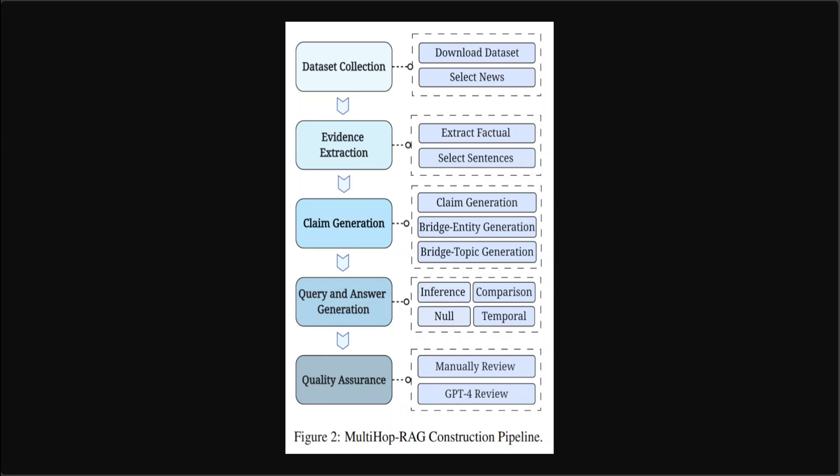Once step one was done, they moved on to the second step: evidence extraction. For each article, they extracted factual or opinion sentences using a trained language model. These factual sentences are later used as evidence for answering multi-hop queries. They included only those news articles containing evidence that may have overlapping keywords with other news articles, allowing them to later create multi-hop queries where the answer evidences are drawn from multiple sources.